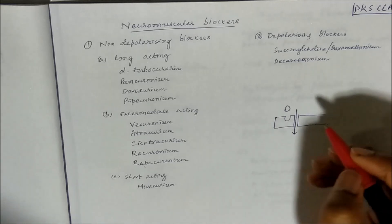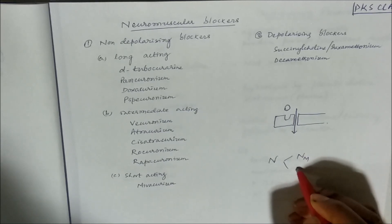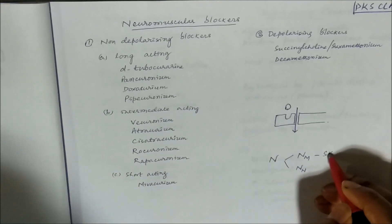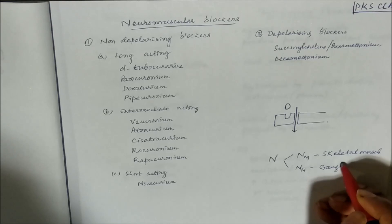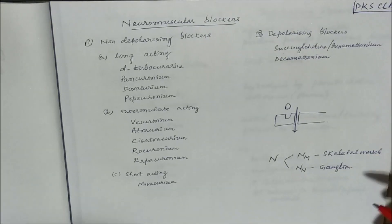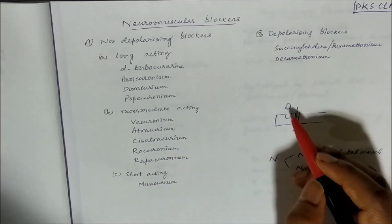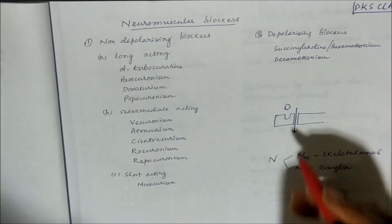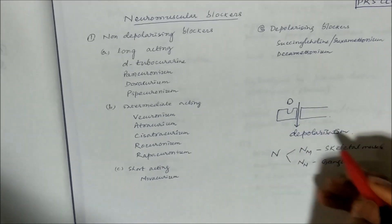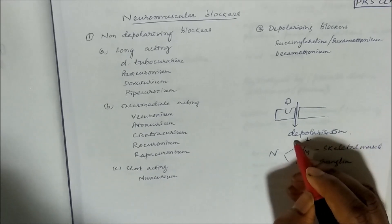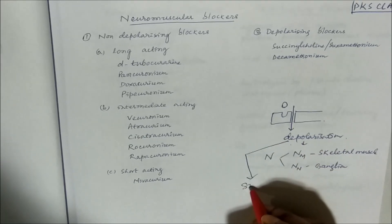Before that, let us discuss that nicotinic receptors are of two types: nicotinic muscular and nicotinic neuronal. Nicotinic muscular is present in skeletal muscle and nicotinic neuronal is present in ganglion. This nicotinic muscular receptor is similar to that receptor — when acetylcholine binds, there will be influx of calcium and depolarization, leading to skeletal muscle contraction.